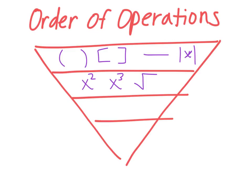Your third level, you need to look for multiplying and dividing. It goes from left to right, so whatever comes first you do first — if dividing comes first, divide first; if multiplying comes first, multiply first. And the very last thing you do is adding and subtracting, which are always last, and again you go from left to right.